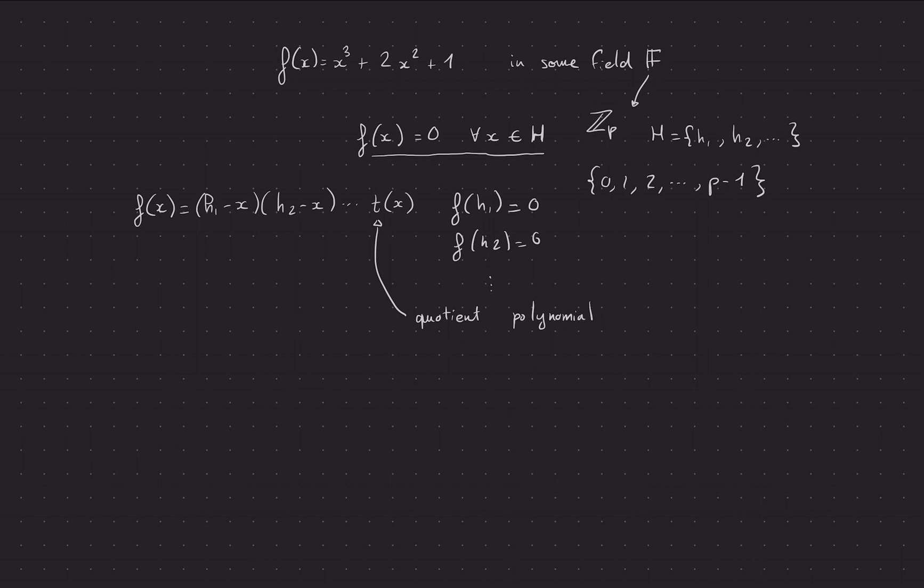And you'll see why we call it this, but basically I hope you're convinced that because h1, h2, etc. are roots of this polynomial, then we can write it like this. And this big multiplication with all the roots we'll call z_H(x), and this is the vanishing polynomial for the domain H. So these are just names, it doesn't really matter, but this is what they are called in the paper and sometimes in other zkSNARK protocols.